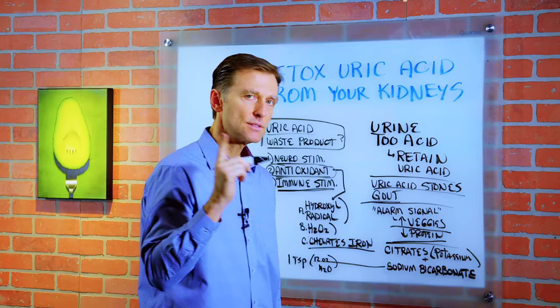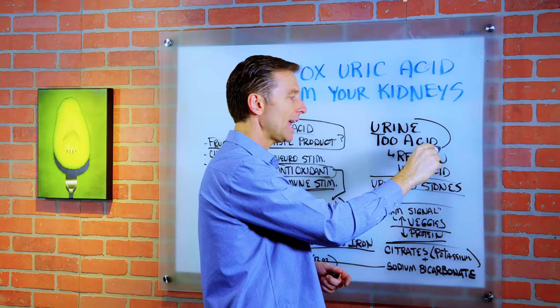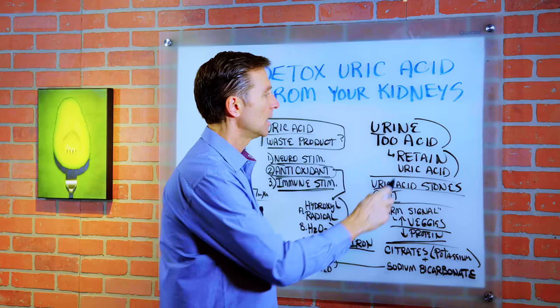If your urine is slightly too acidic, you'll have a tendency to retain uric acid in the kidney. If you just alkalize the urine a little bit, what happens is this uric acid can actually come out through the kidneys and you can urinate it out.